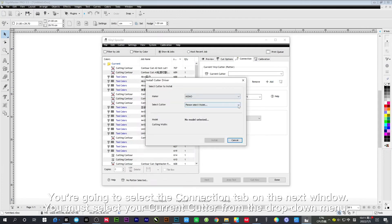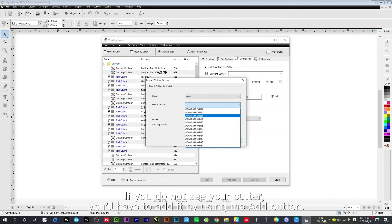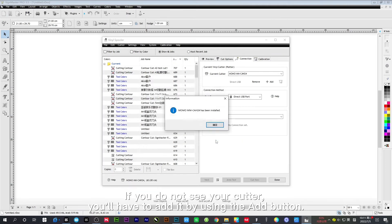You must select your current cutter from the drop-down menu. If you do not see your cutter, you will have to add it by using the Add button.